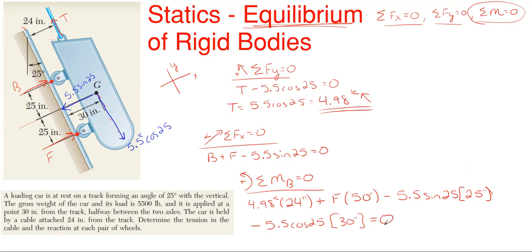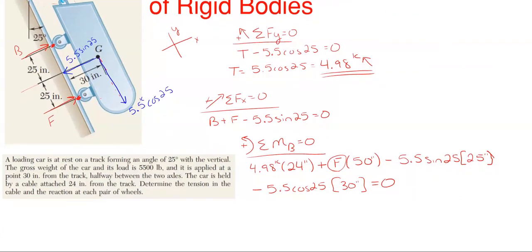So minus 5.5 cosine of 25 times its perpendicular distance to get it over to b which is 30 inches. And that's all I have for my moment equation. So as you can see in this moment equation the only unknown that I have is f. So I can rearrange and solve for f and once you do that f pops out to be 1.76 kips. It came out to be a positive number so I know that my originally assumed arrow direction is the correct one.